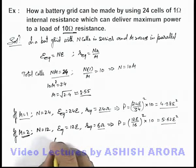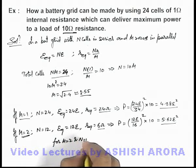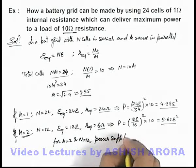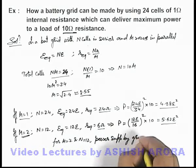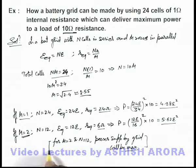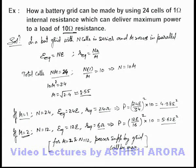Comparing the two cases, for m = 2 the power is on the higher side. So we can say that for m = 2 and n = 12, the power supplied by the grid will be maximum. This is how we calculate the total number of cells in series and the number of rows in parallel — the battery grid design that supplies maximum power to the 10 ohm external resistance.